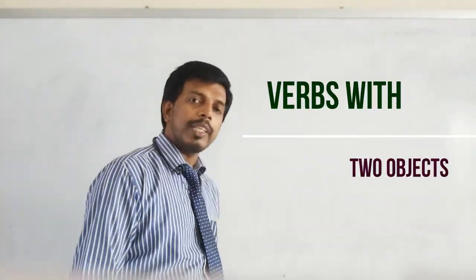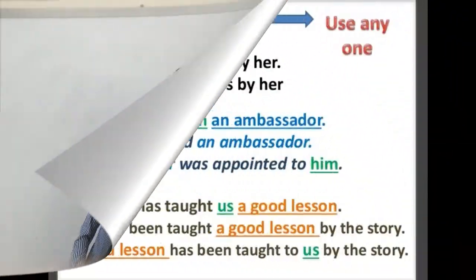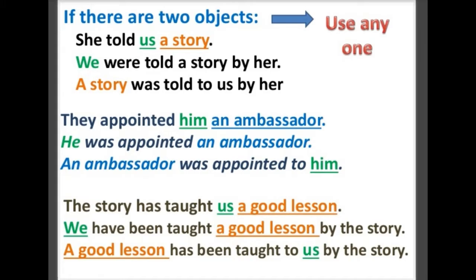Now let us see what happens to active tense sentences which have two objects. If there are two objects in the sentence, we can use any one of them as the subject of the passive voice. For example, 'She told us a story' has two objects: 'us' and 'a story.' We can write the passive voice in two ways: 'We were told a story by her,' or 'A story was told to us by her.'